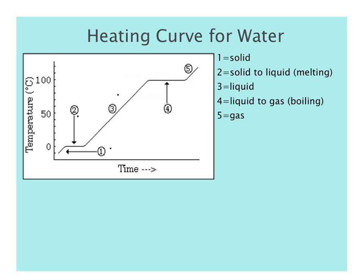In segment three, the liquid is warming and experiencing a change in temperature as the speed of the particles changes. Segment four is where boiling occurs — again, no change in temperature because we're changing phases, experiencing a change in particle arrangement going from liquid to gas. If you collected that gas for segment five and continued heating it, you would see an increase in temperature or kinetic energy. The phase changes occur at zero degrees Celsius for melting and 100 degrees Celsius for boiling.